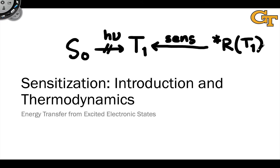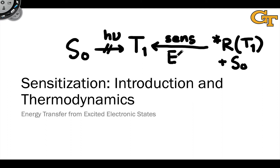For example, a triplet molecule R* is combined with the ground state of our molecule of interest, and an energy transfer process takes place to generate the T1 state of our molecule of interest. This is called triplet sensitization, and it's a very common route to the generation of triplet states that can't be made through excitation followed by inter-system crossing.